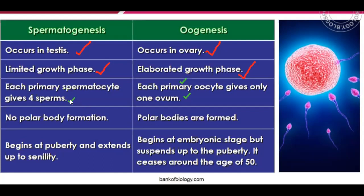In spermatogenesis, one sperm mother cell gives rise to four sperm. There is no polar body formation. But in oogenesis, polar bodies are formed. Spermatogenesis begins at puberty and extends up to senility — spermatogenesis never stops.